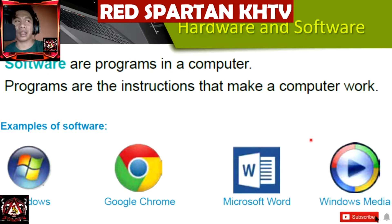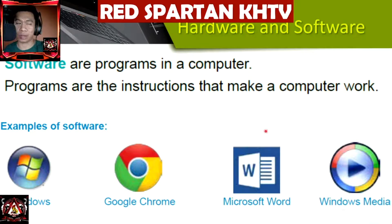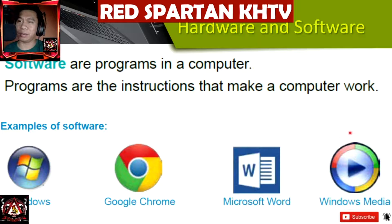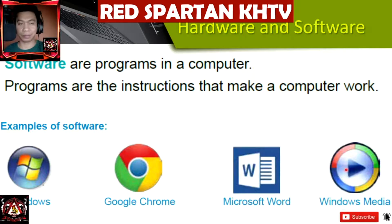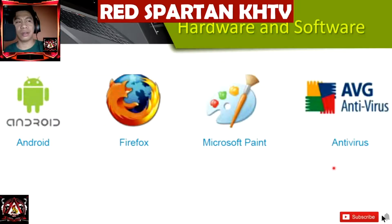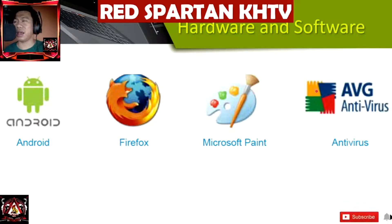Software are the programs in a computer. Programs are the instructions that make a computer work. We have here Windows, Google Chrome, Microsoft Word, and Windows Media Player. There are some more software like Android, Mozilla Firefox, Microsoft Paint, and Antivirus.